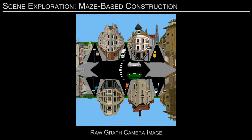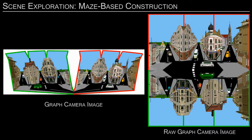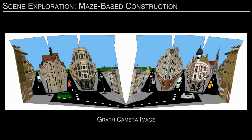A similar graph camera is constructed to sample behind the user. The raw graph camera images are mapped to a display surface. The left panel shows behind and the right panel in front of the user. The resulting graph camera image captures the current street segment as well as the street segments beyond the first intersections.